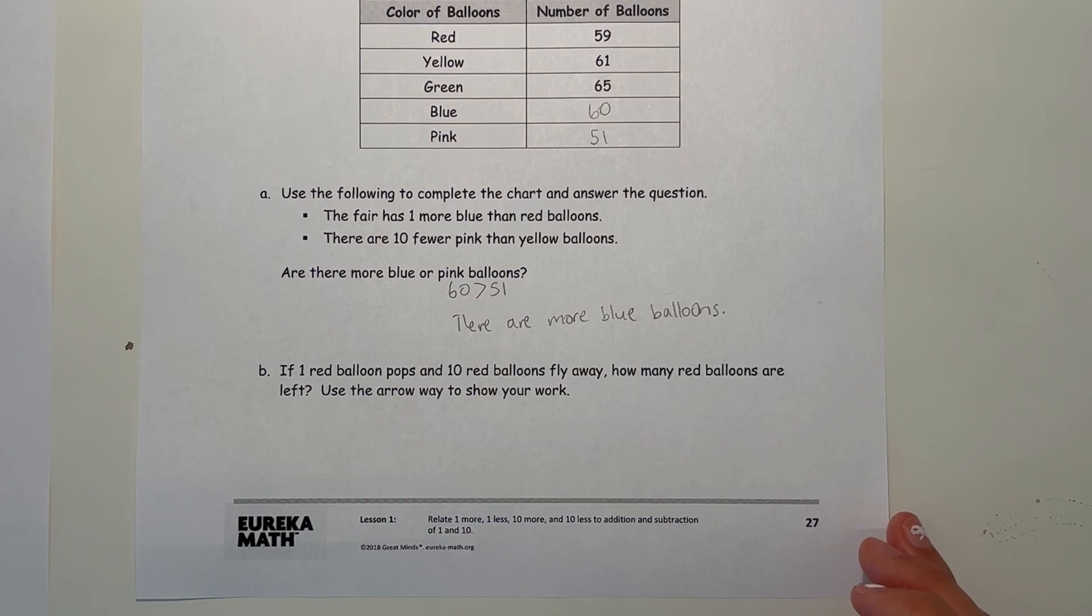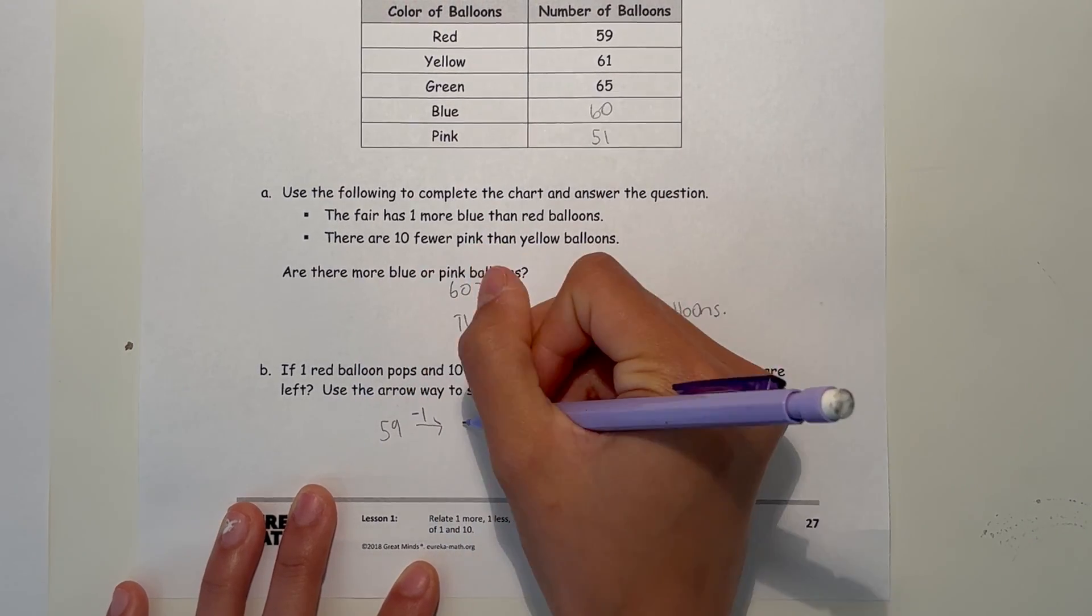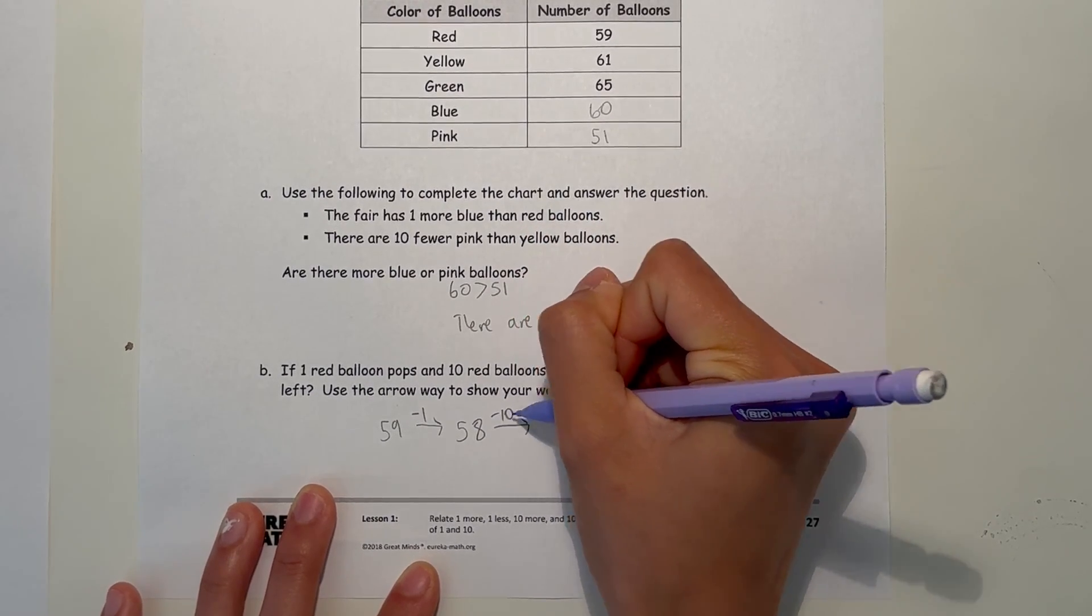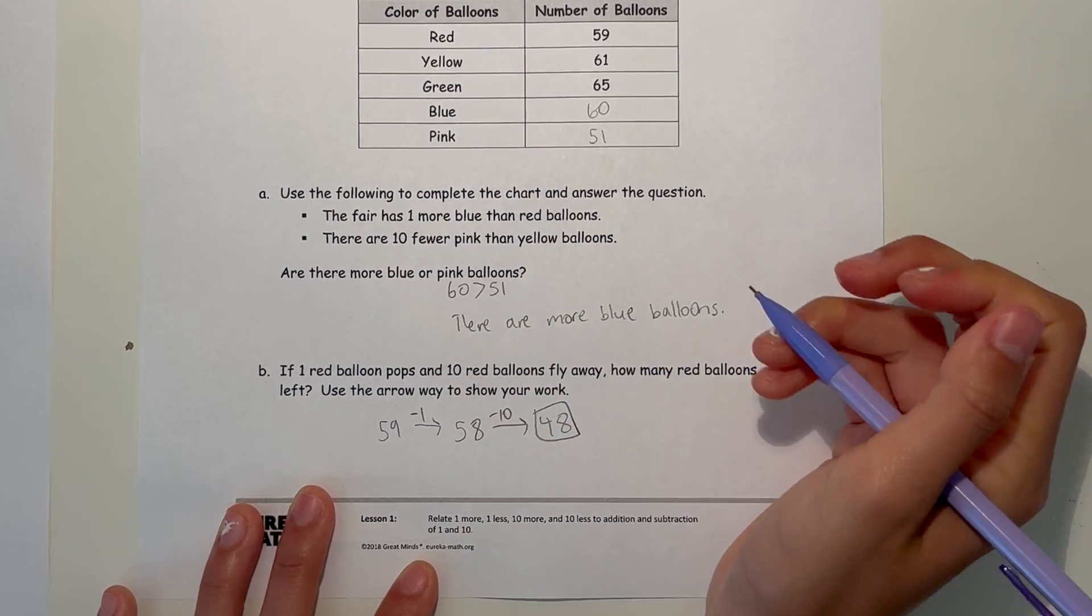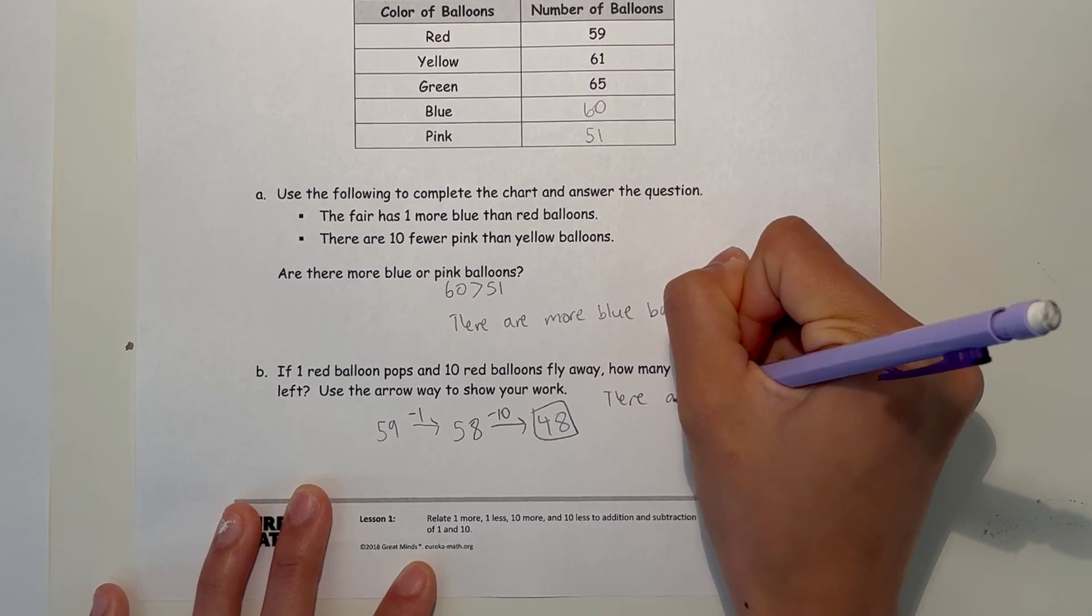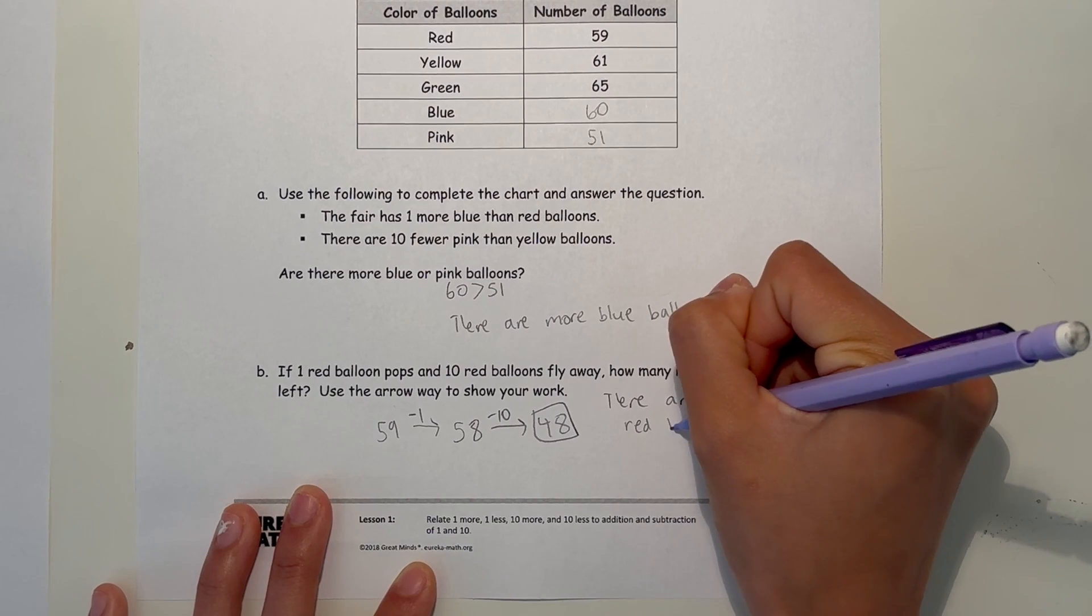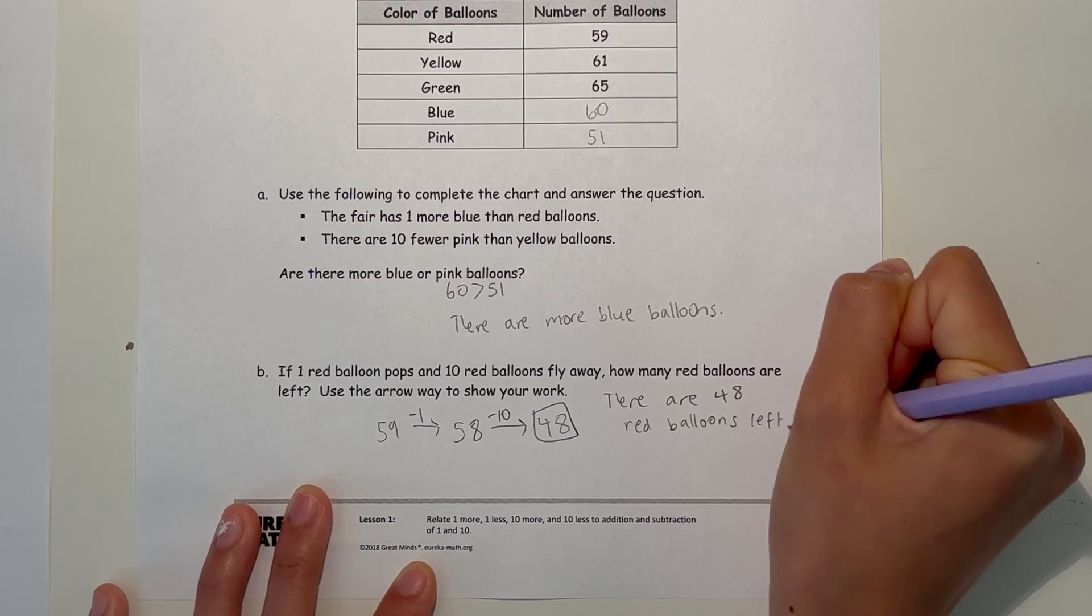If 1 red balloon pops and 10 red balloons fly away, how many red balloons are left? Show your work. So we have 59 red balloons but 1 pops so that's minus 1 because that's 1 gone, that's 58, and 10 fly away so you have 10 less balloons, so then that means you have 48 balloons. So that means there are 48 red balloons left.